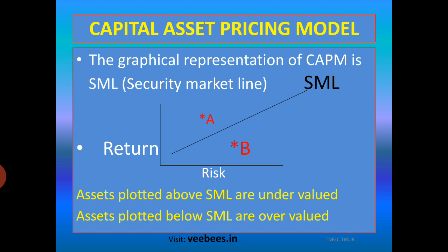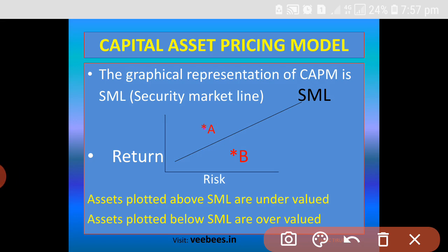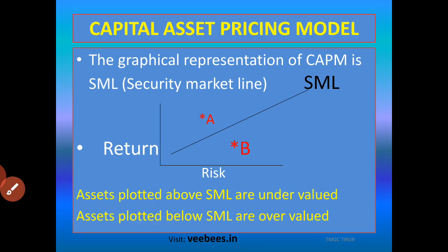Security A is denoted as undervalued because, when compared to the risk taken, it has got a higher return. For taking this level of risk, the investor has received a higher return than what the SML would suggest. Because the price is low relative to the return received, the security is undervalued.